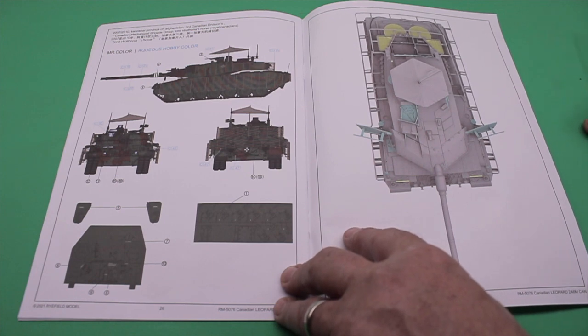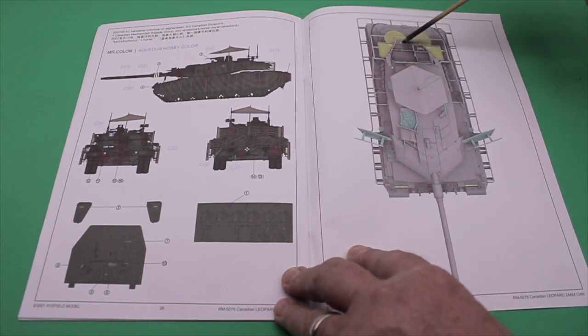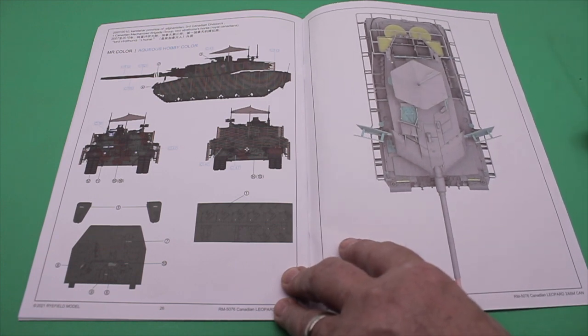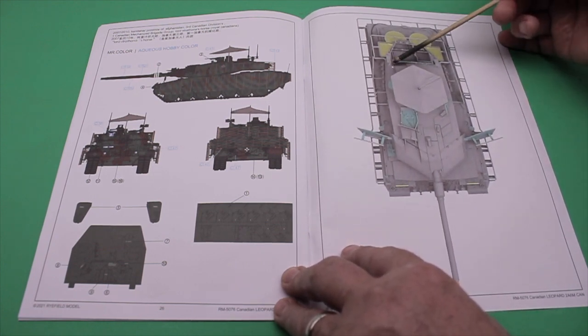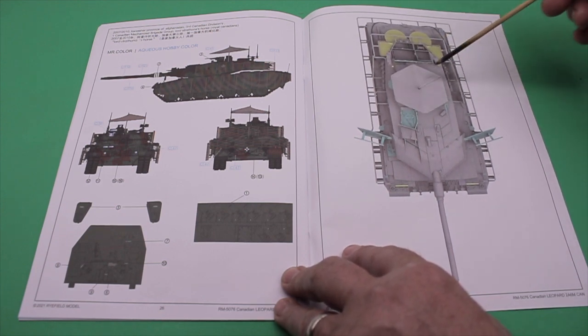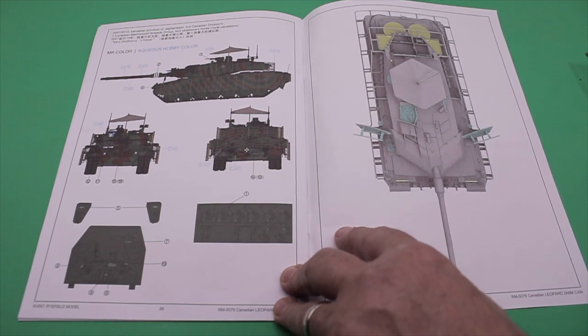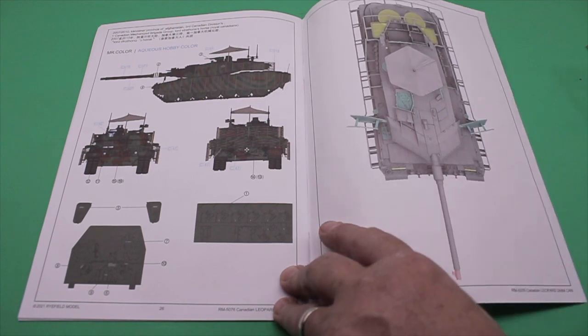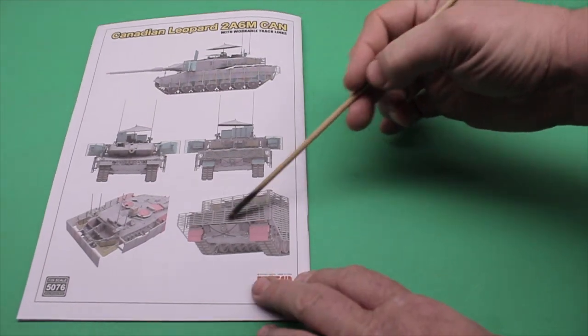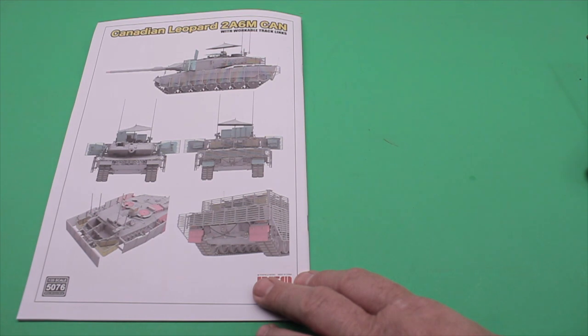And then here they just show some pictures of the model assembled, some of the hatches. You can see all the different things you can have open on it. The other thing I didn't mention is this is the first model that has all of the padlocks that are all over the vehicle for all these different access points. They actually have all the padlocks, a really neat aspect there. And then the last part of the page is just another picture. This is the same picture you'll see on the internet advertisements of the model.